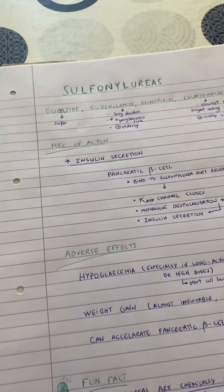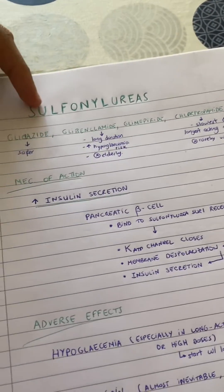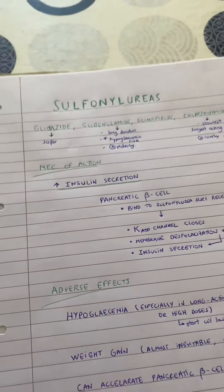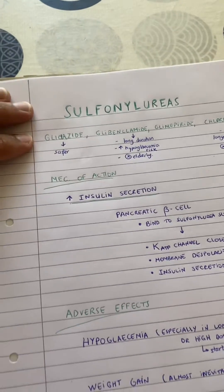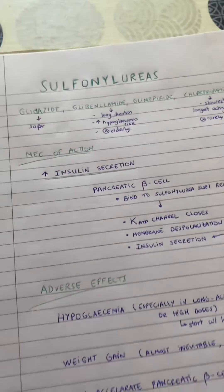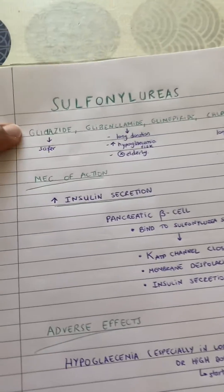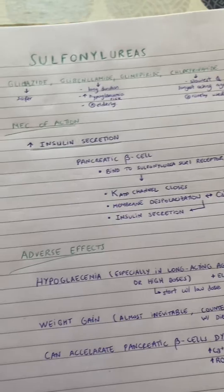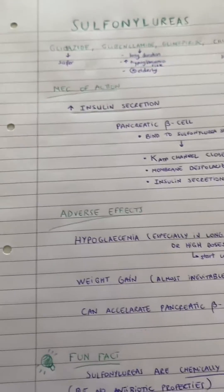Hi everyone, so today we got sulfonylureas recap. We got different drugs in this class: gliclozide, glibenclamide, glimepiride, etc. Gliclozide is actually the safer, and we will understand why. We'll talk about the mechanism of action, adverse effects, and the fun fact.